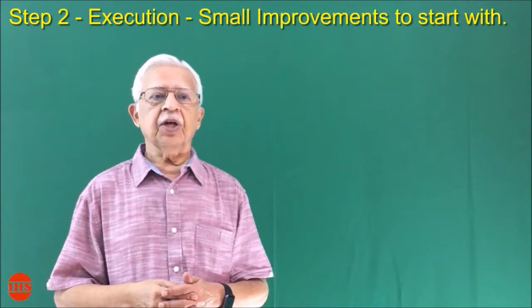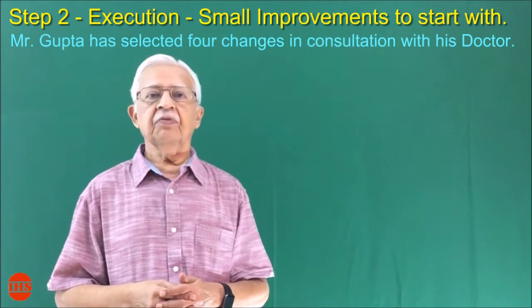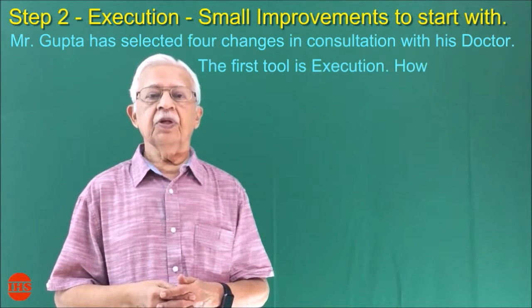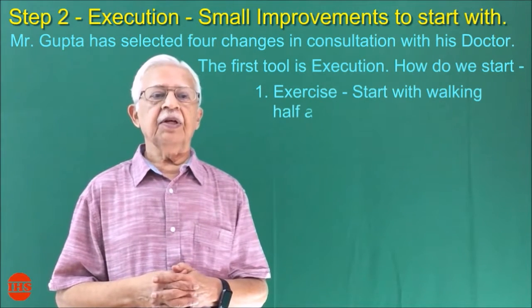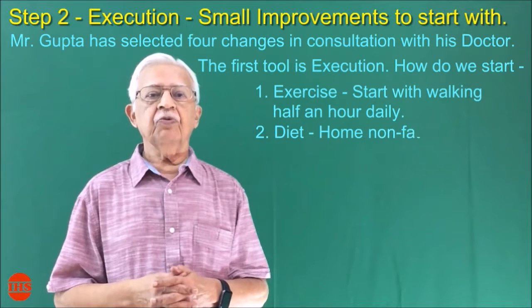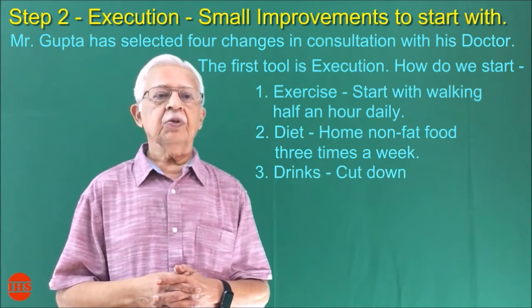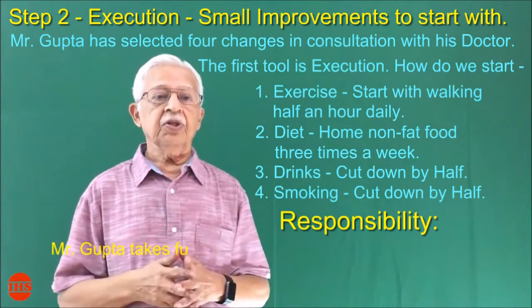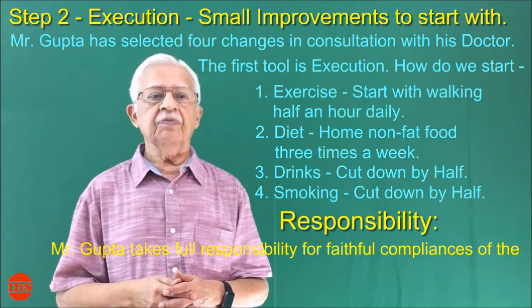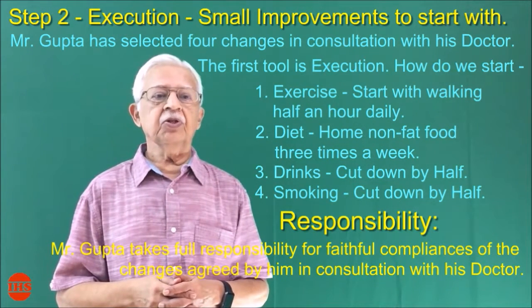Step 2: Execution. Start with small improvements. Mr. Gupta has selected four changes in consultation with his doctor. Exercise: start with walking half an hour daily. Diet at home: non-fat food three times a week. Drinks: cut down by half. Smoking: cut down by half. Mr. Gupta takes full responsibility for faithful compliance of the changes agreed with his doctor.